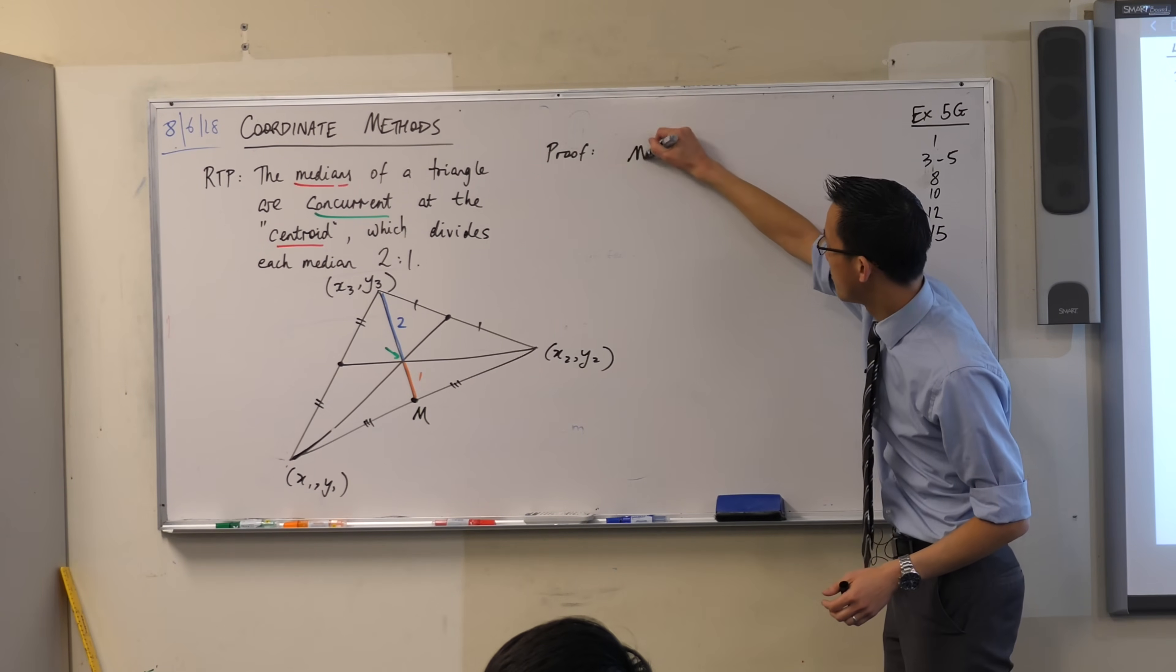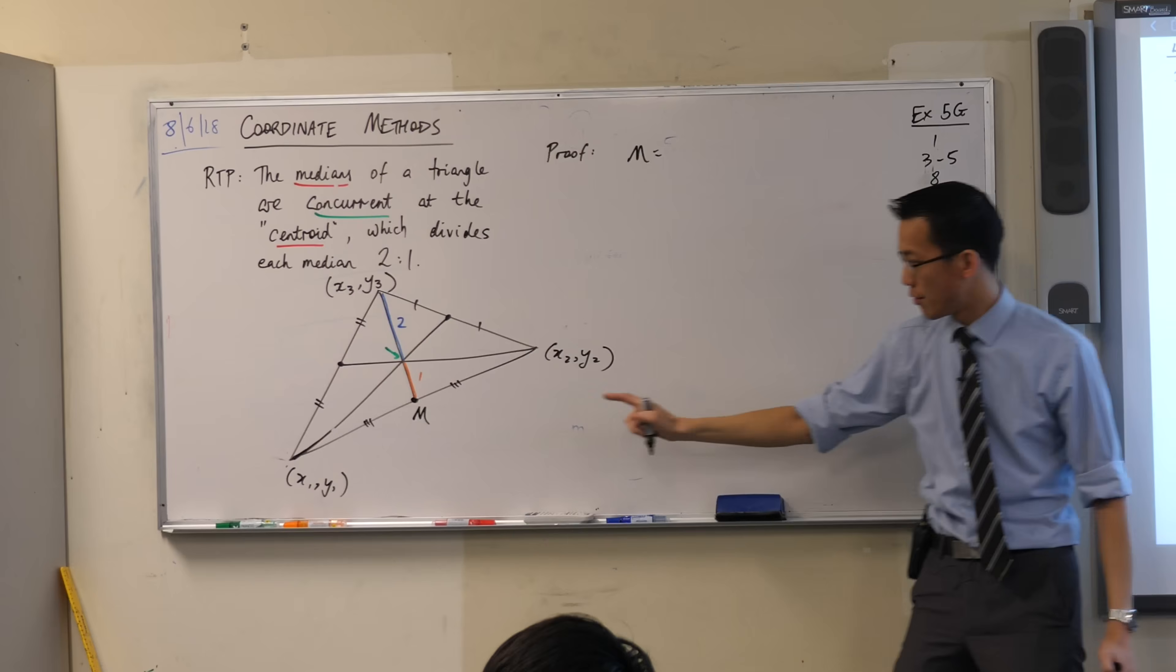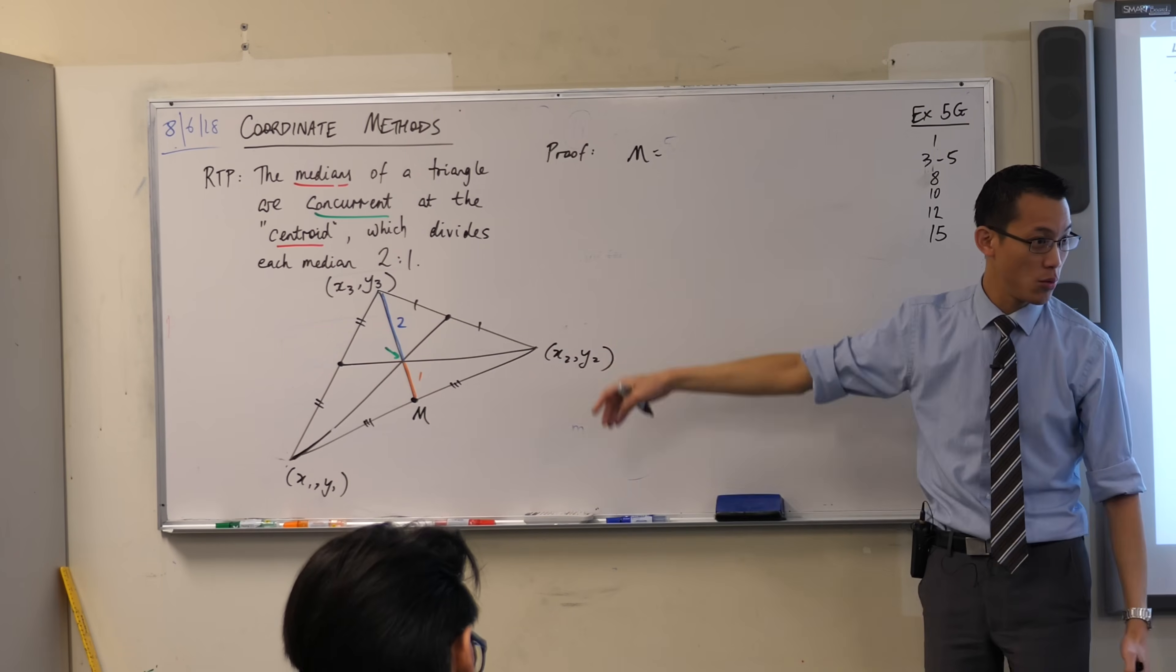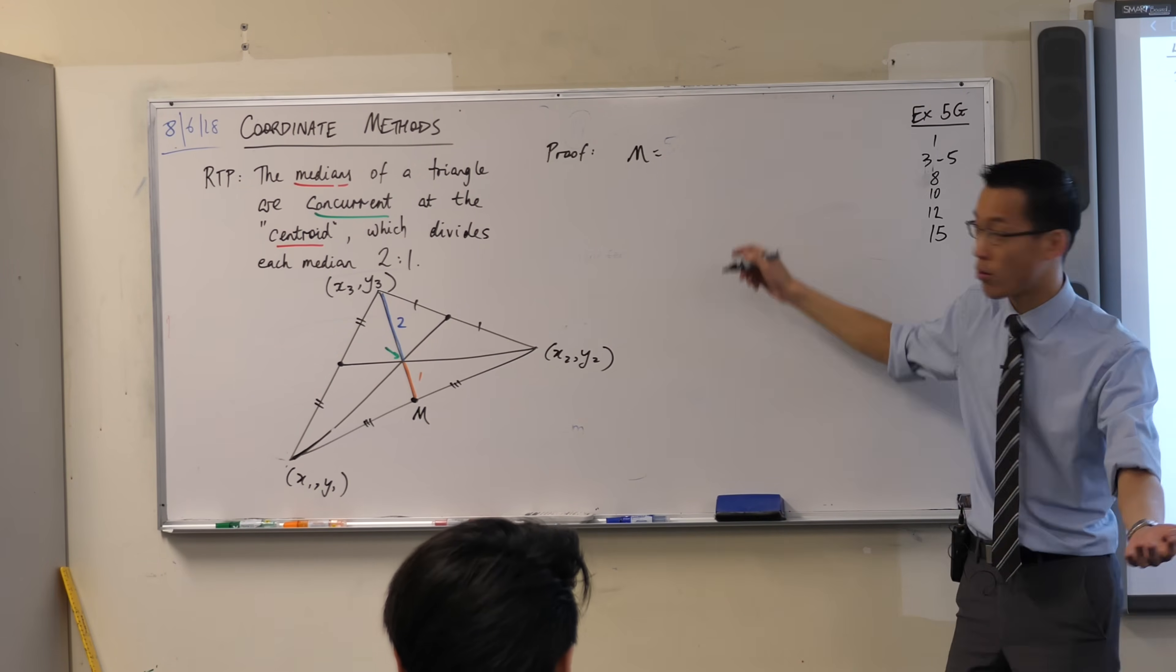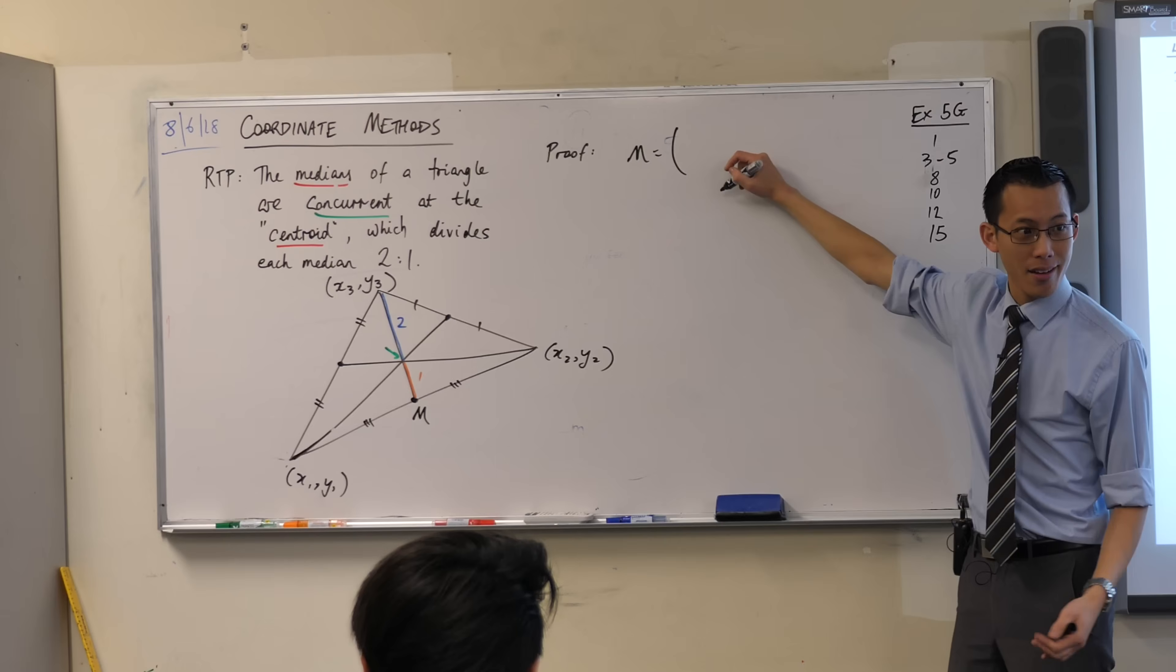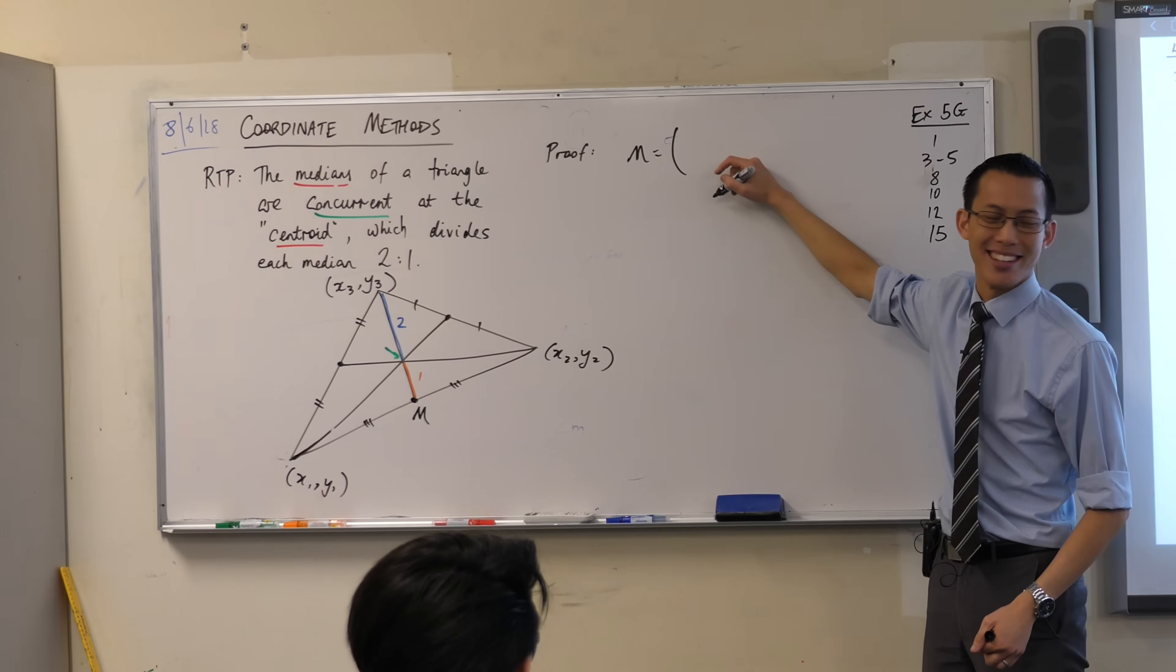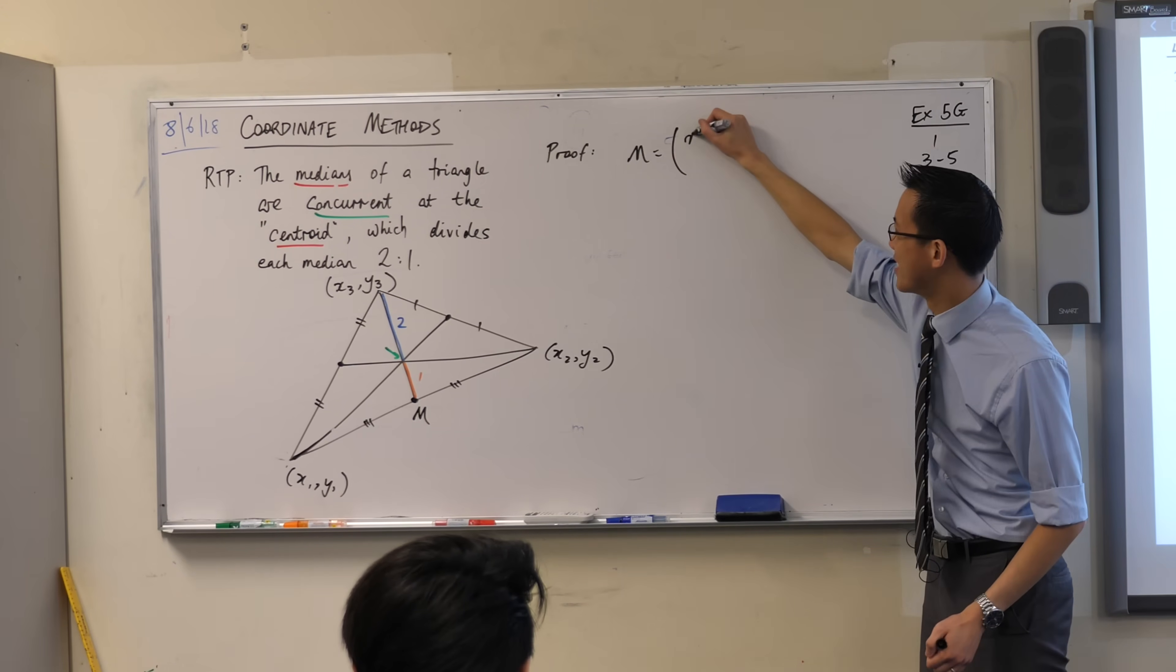this is pretty simple, right? To find m, it's the midpoint of x1, y1, and x2, y2. Can you go ahead and quote that to me? What's the midpoint? I'll give you a clue. It starts with an x. I'll give you that one for free. Tell me what else to write.